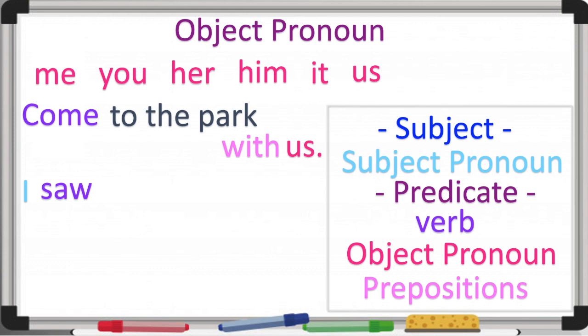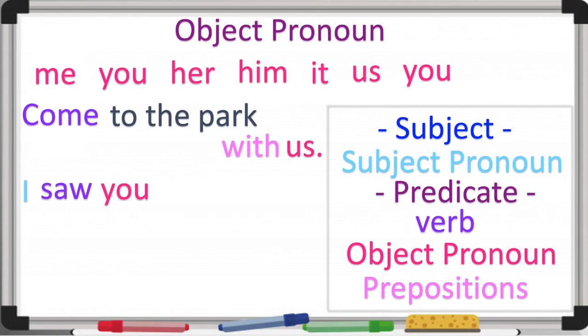'I saw you swimming in the sea.' 'I' is my subject pronoun, 'saw' is my verb, and 'you' is the object pronoun right after the verb. We have a compound predicate here, but the object pronoun comes after the first verb. I saw you swimming in the sea.